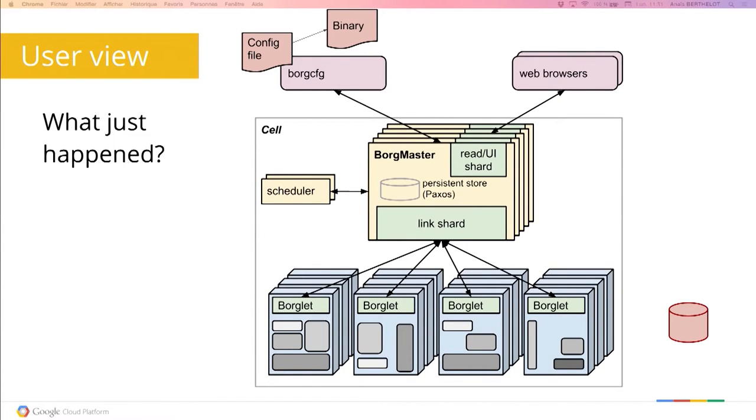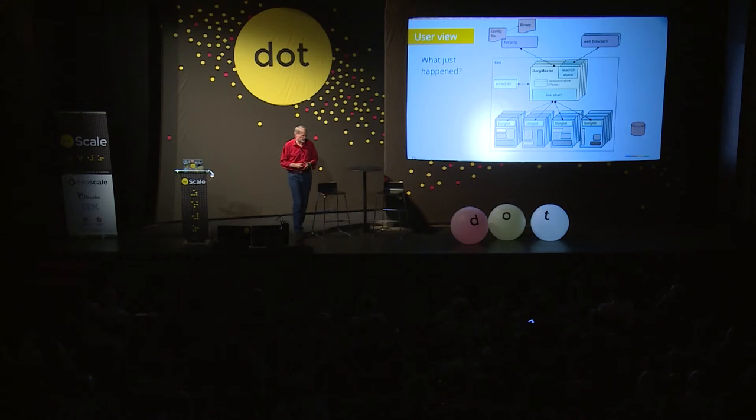Let me show you what happened inside the system. This is called Borg. It has a component called the Borg master, which is the master for the cell. I use the word 'cluster' to mean a set of machines connected with a very high-speed network inside a data center. I use 'cell' to mean a subset of that cluster which is managed by a single Borg master. Typically there is one large cell in each cluster, but occasionally we fragment them in different ways.